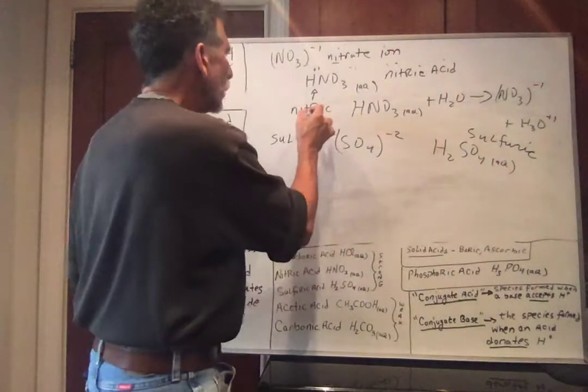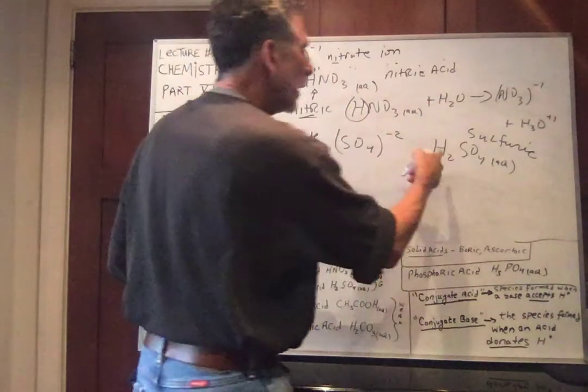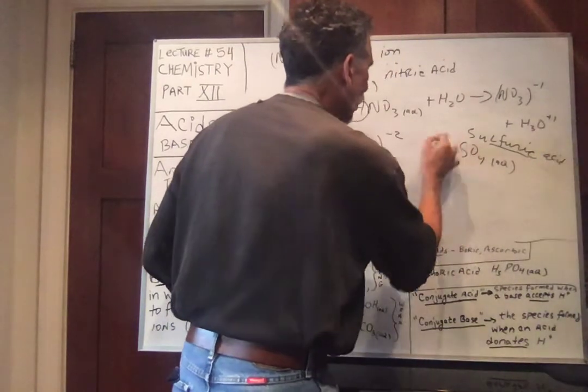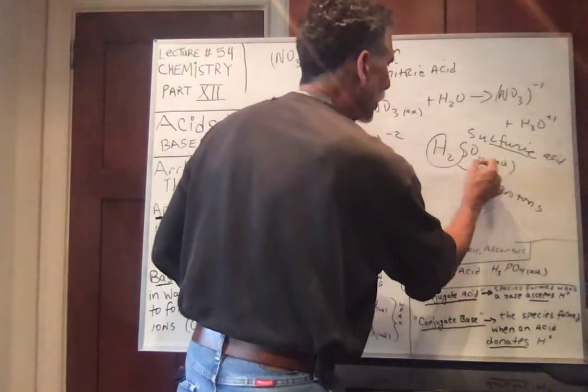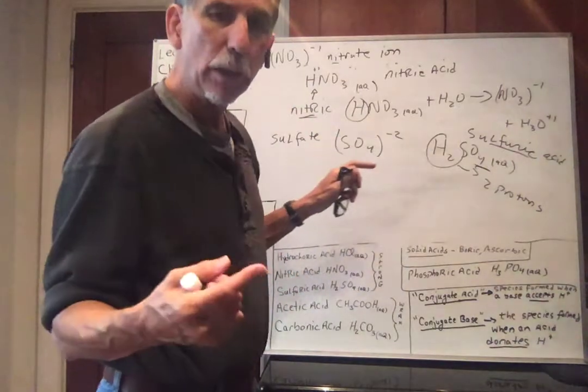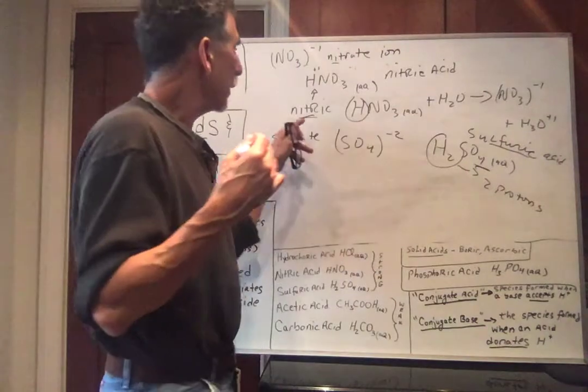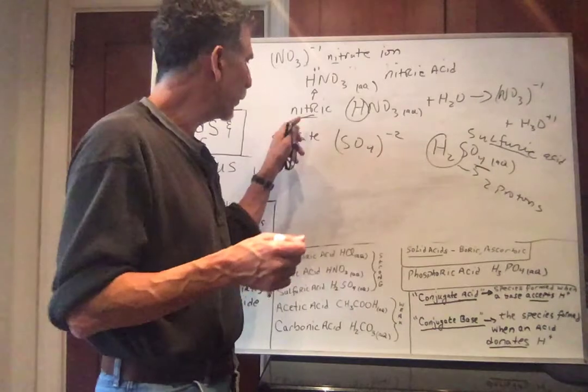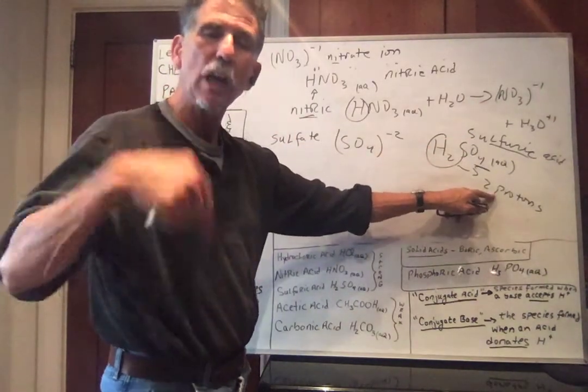So nitric acid is giving up a single proton, single proton. In solution, sulfuric acid wants to give away two protons, because it wants to be the sulfate ion minus two. We would say that nitric acid is monoprotic, one proton. So nitric acid is a monoprotic acid. What do you think sulfuric acid is? Well, sulfuric acid wants to give up two protons. So it's diprotic.